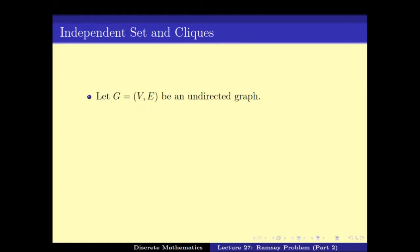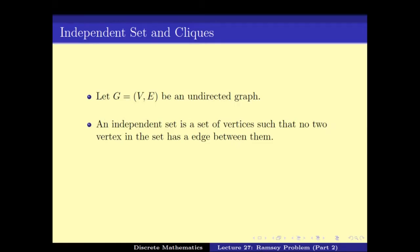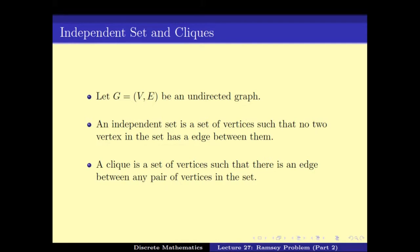In the last video we also looked at some other definitions in graph theory. In particular we looked at independent sets and cliques. An independent set is a set of vertices such that no two vertices in the set have an edge between them. A clique is the opposite — a set of vertices such that between any pair of vertices in the set there is an edge.